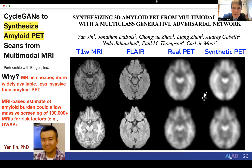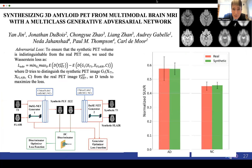A remarkable extension of this, in work with Yan Jin and colleagues at Biogen, is to synthesize types of scans that were not collected. MRI is cheaper and more widely available than amyloid PET scans, yet most major drug developments in Alzheimer's disease target amyloid. An MRI-based estimate of amyloid burden could allow massive screening of hundreds of thousands of scans for risk factors. This work used a cycle GAN to fuse T1-weighted and FLAIR imaging from MRI, and proved that the synthetic PET scans are almost identical to those actually collected, giving derived estimates of amyloid burden in AD and normal controls.